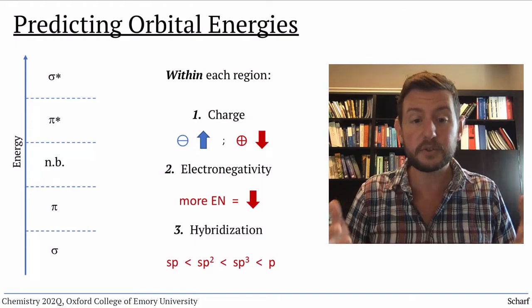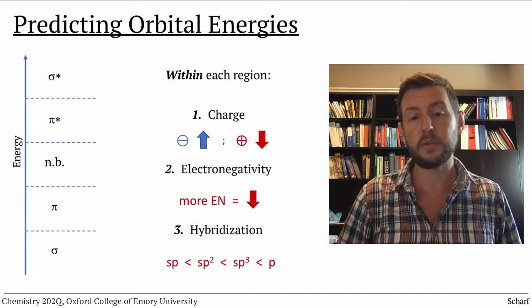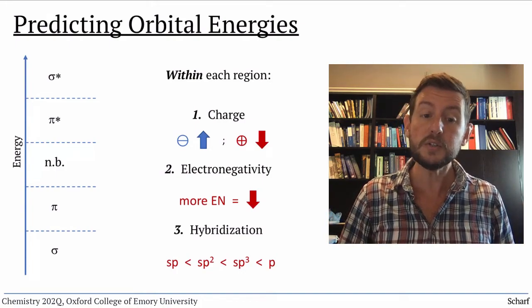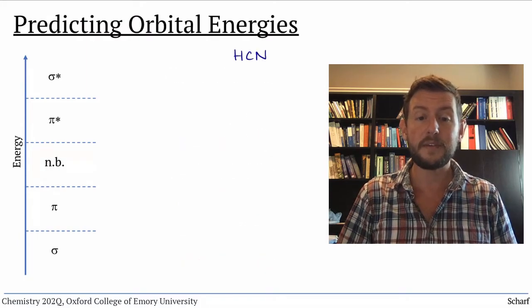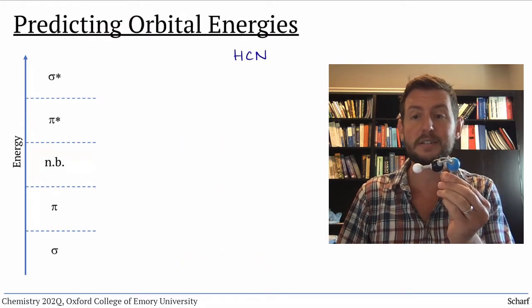There are several other trends, but these are the most important three for us. So let's use this information to construct the MO diagram of HCN, hydrogen cyanide.